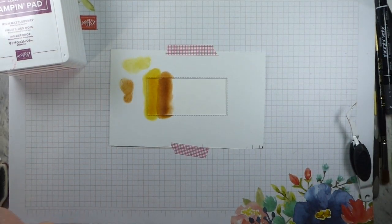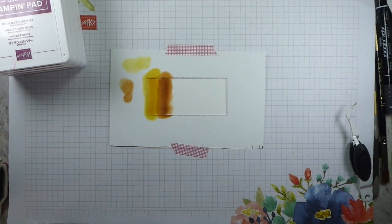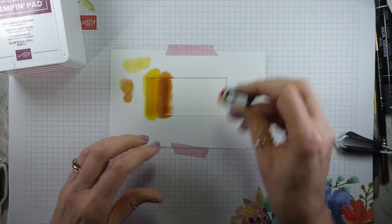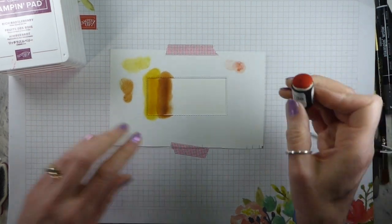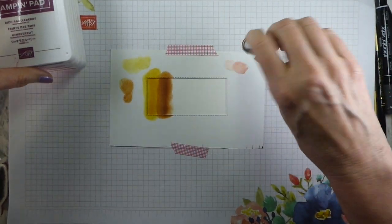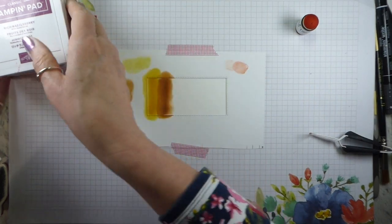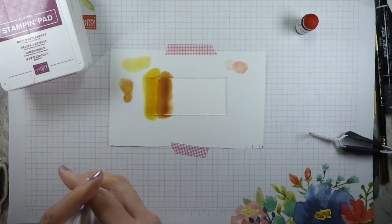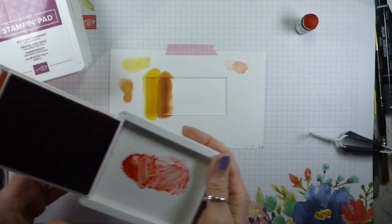This again has got a reasonable amount of glycerin in it because it's done that kind of smudgy bit. Let's add some Cinnamon Cider. Now you want to blend into the Bumblebee, but you don't want to blend all of the Bumblebee away.